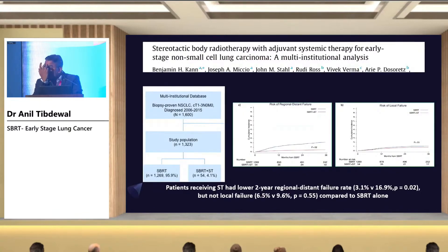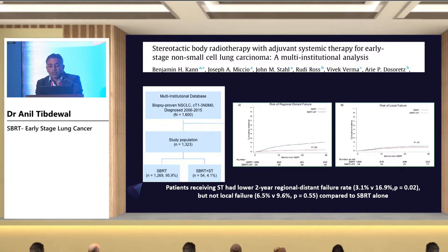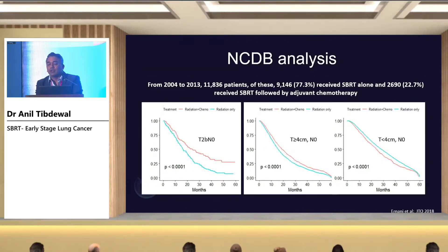Regarding adjuvant chemotherapy, there are no randomized control trials, but multi-institutional and NCDB analyses have shown that adjuvant systemic therapy for tumor sizes more than 4 cm decreases local-regional recurrence rate compared to tumors less than 4 cm. If a patient has a tumor size more than 4 cm, refer to a medical oncologist to decide whether adjuvant chemotherapy is needed.